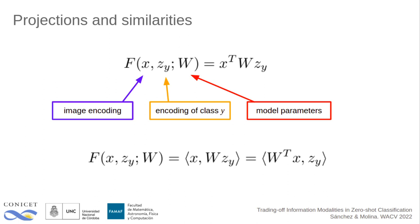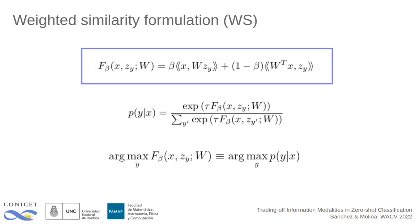To learn the matrix W we propose two different formulations. The first one considers the convex combination of scores computed independently on each space, where the factor beta controls the trade-off between similarities in the visual and semantic domains. We define a softmax posterior with a trainable scaling parameter tau and learn the matrix W under a maximum likelihood criterion. For the second formulation, we first define conditional PDFs on each space and consider as a scoring function the point-wise maximum. Based on an upper bound on the likelihood, we derive a loss function that corresponds to a convex combination of the losses defined independently on each space.